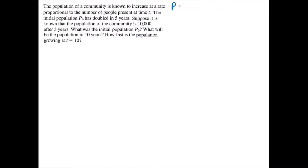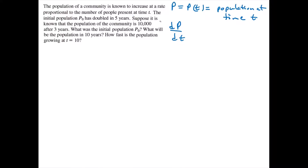We'll let p, which is a function of t, be equal to the population at time t. The questions we wish to answer can be more easily answered if we have a function for p. We are given a relationship involving the rate of increase in p. The rate of increase, dp/dt, is proportional to the number of people present at time t, so that will equal some constant of proportionality k times p. This is a differential equation, and we can solve it by separation of variables.